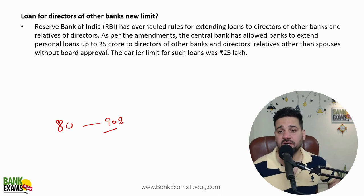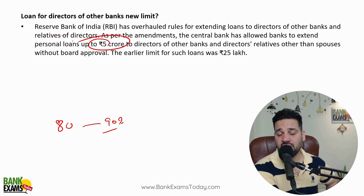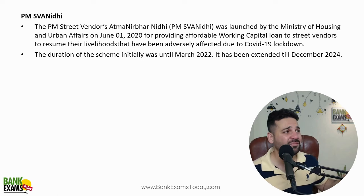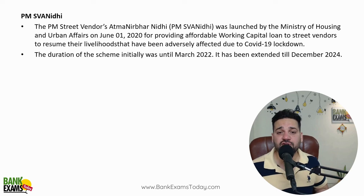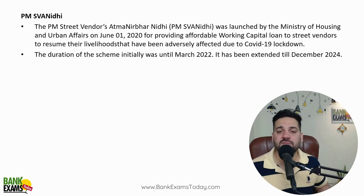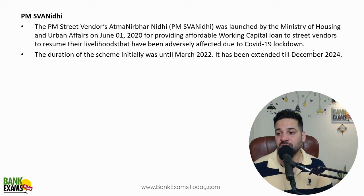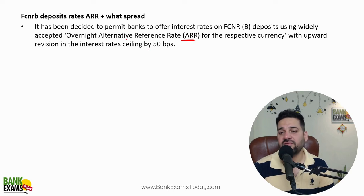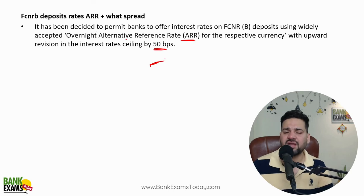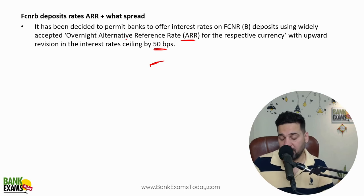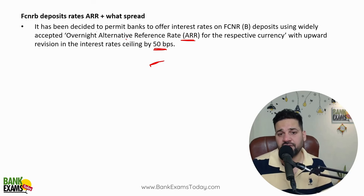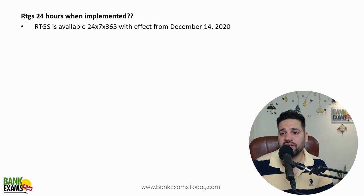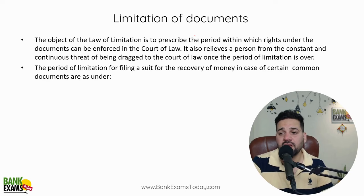Loan to director — this is an RBI circular. The limit is 5 crore; it used to be 25 lakhs. This is a very important RBI circular we covered as a quiz as well. There were a lot of questions from question banks — from RBI circulars, IRAC norms, documentation, IBC, SARFAESI, government schemes like PM SVANidhi. The PM SVANidhi scheme has been extended till December 2024. FCNR — you can give FCNR at ARR rate plus 50 basis points above the overnight alternative reference rate — basically an FD in foreign currency for NRI customers.